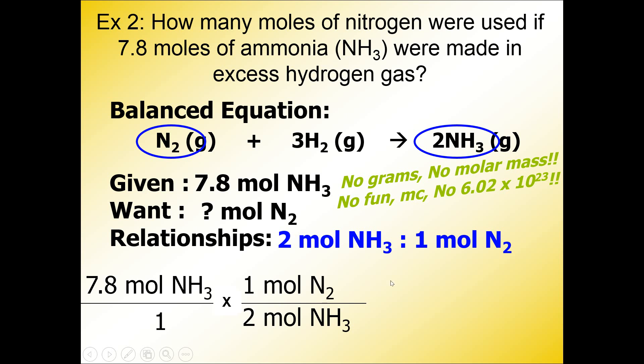And so now, when I cancel out my units diagonally that match up, moles of NH3 and moles of NH3, I'm left with moles of N2. Now, I can always double-check my want, and if they match up, that means I did the problem right, and I can go ahead and proceed to the actual calculation.